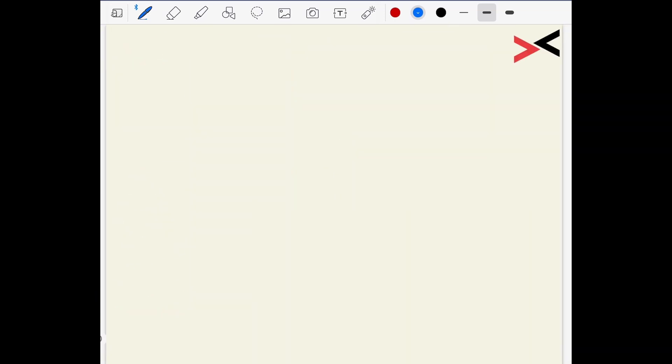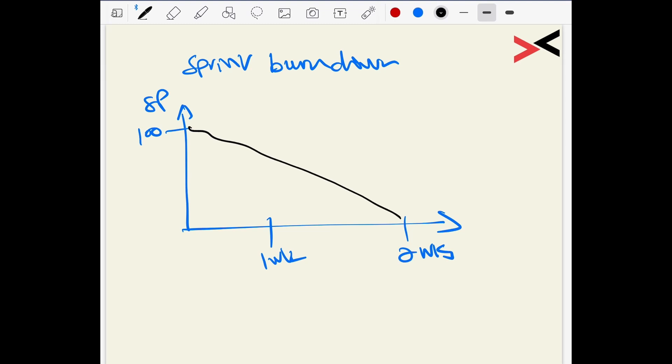The other one that we can work on is the sprint burndown. The sprint burndown chart basically takes the current sprint and says, okay, how many story points did you start off with? 100. So you have one week here, and you have two weeks over here. That's when the sprint finishes. Ideally, you need to go straight and that's how you're going to finish it.